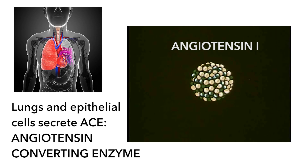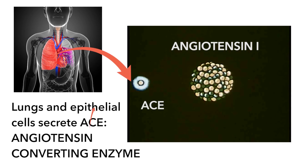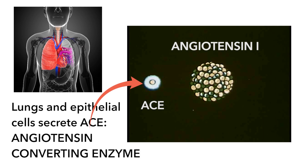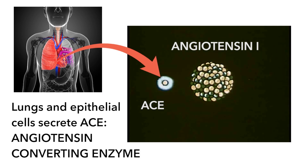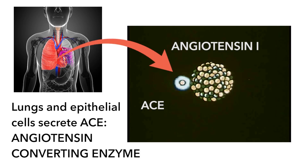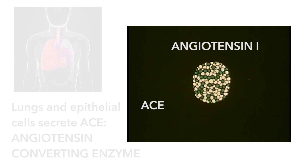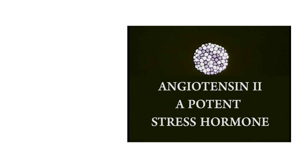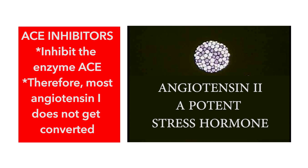Angiotensin I is cleaved to angiotensin II by coming into contact with angiotensin-converting enzyme. ACE is released from the lungs and from epithelial cells. When ACE hits angiotensin I, there will be a cleaving to the active angiotensin II. Our ACE inhibitors block most of the production of angiotensin II, but not all of it, because some is produced by another pathway.